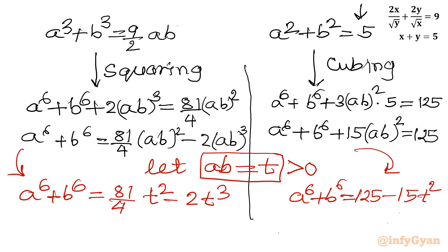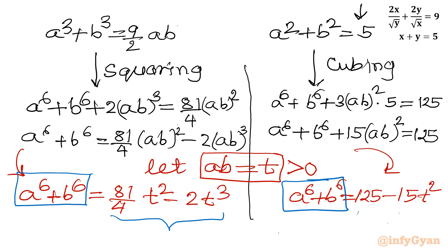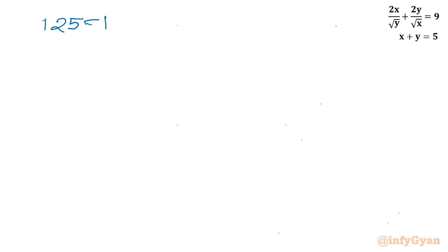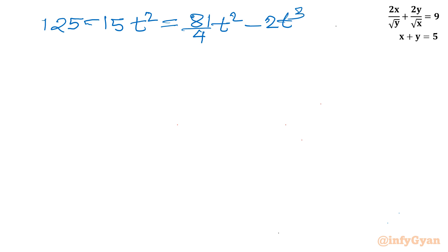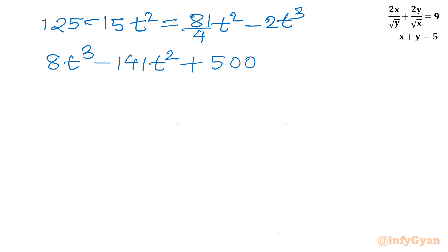Both expressions equal a to the 6th plus b to the 6th, so we equate them: 125 minus 15t squared equals 81 over 4 times t squared minus 2t cubed. Simplifying and moving all terms to one side gives the cubic equation 8t cubed minus 141t squared plus 500 equals 0.